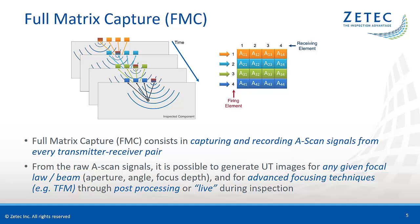From the raw A-scan signals, it is then possible to generate UT images for any given focal law in terms of aperture, angle, or focus depth, and for advanced focusing techniques through post-processing and recently also live during inspection. The underlying mathematics for the processing of FMC data was described more than 10 years ago, but in recent years, a drastic increase in processing power allows performing the summing operations while the probe is moving over the component. So the time-consuming storage of elementary FMC data can be avoided and the resulting inspection speed becomes comparable to standard phased array.